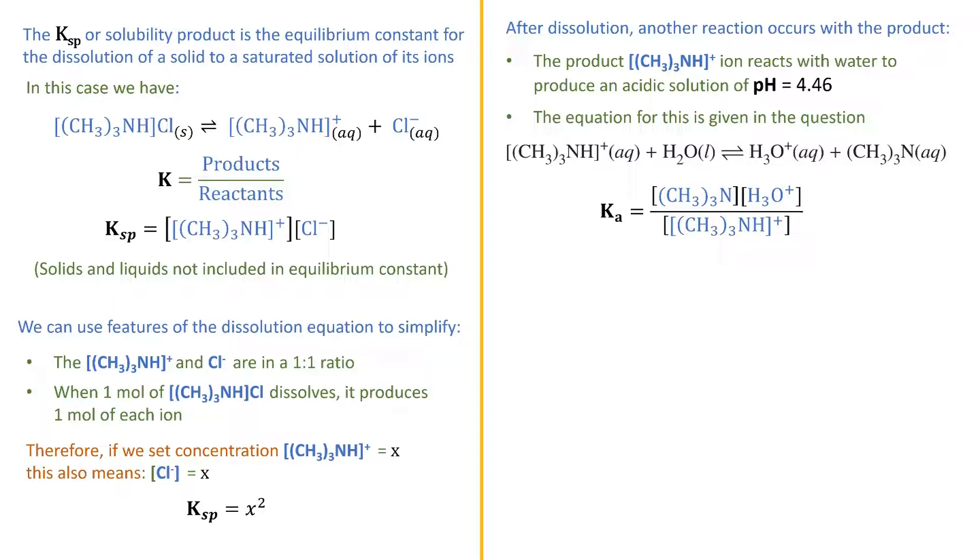Again, we seem to be missing one of the products. In this case, there is no H2O in the expression. And just as before, this is because solids and liquids are not included in any equilibrium constant expression. The question itself also gives us the value for the acid dissociation constant for the trimethylammonium ion, which is 1.55 times 10 to the negative 10.